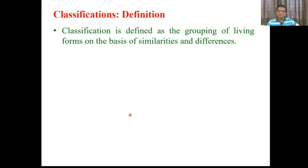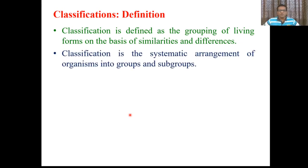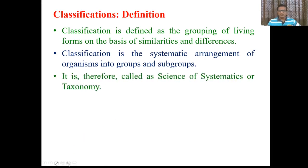To study this diversity, we have to classify these organisms. We have to put organisms into groups and subgroups. Classification is defined as a grouping of organisms on the basis of similarities and differences. It is a grouping of living forms on the basis of similarities and differences. We find out what similar characters are there, what differences are there, and on that basis we put them into different classes, groups, and divisions. Classification is the systematic arrangement of organisms into groups and subgroups.